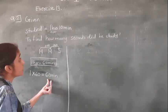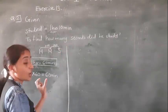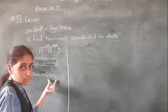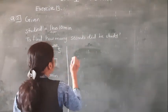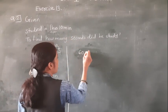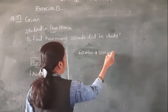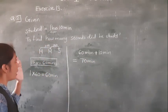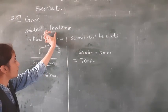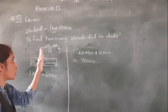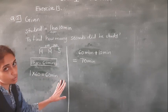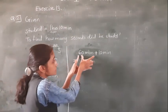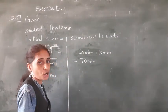Minutes we got. Now minutes we need to convert into seconds. We got 60 minutes. Still there are 10 more minutes. So add 60 minutes and 10 minutes — 60 + 10 = 70 minutes total. We convert hours into minutes: 1 hour is equal to 60 minutes, multiply by 60 = 60 minutes. Plus the remaining 10 minutes — total 70 minutes.